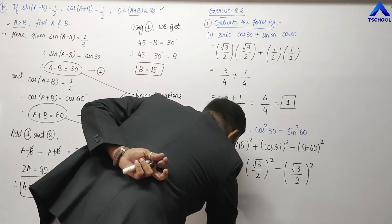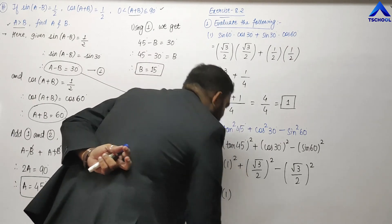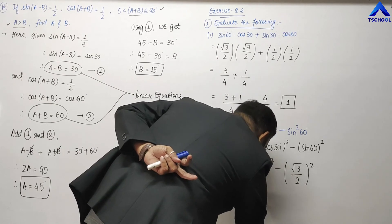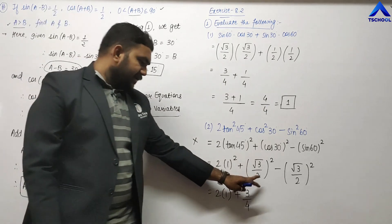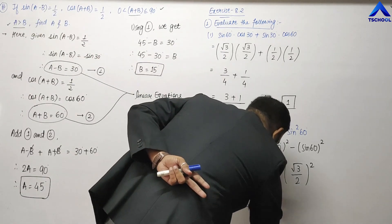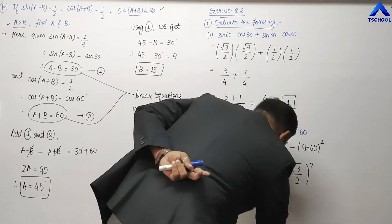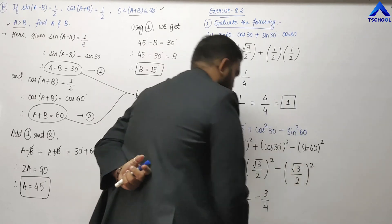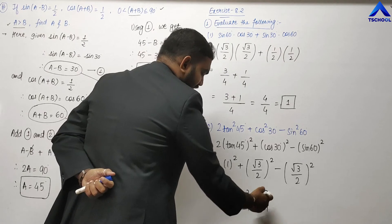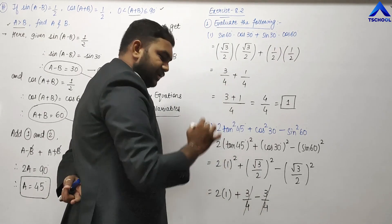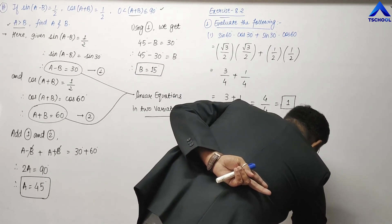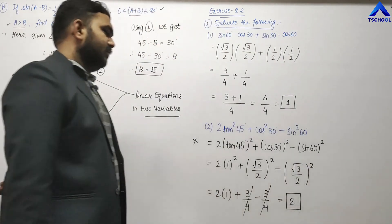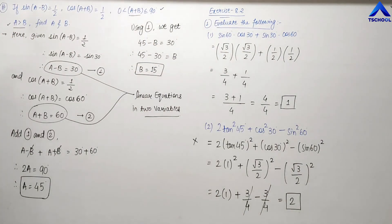Simplifying: 2 × 1 = 2, plus (3/4) minus (3/4). The 3/4 terms cancel, so the answer is 2. The answer to the second question is 2.